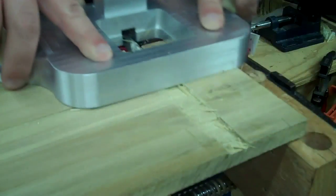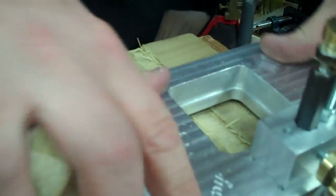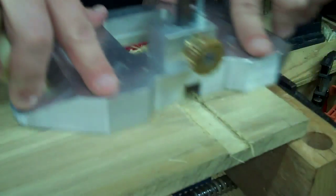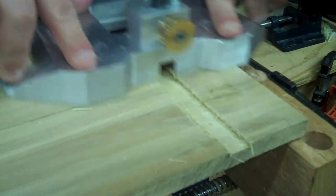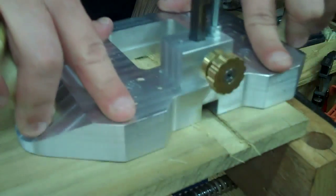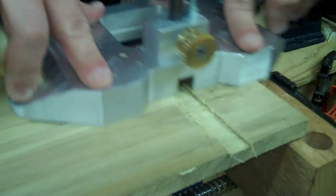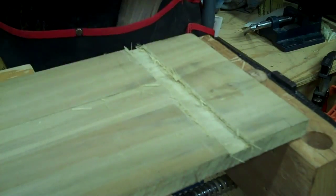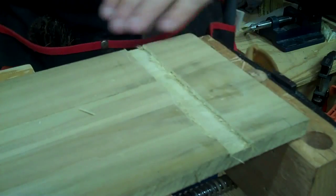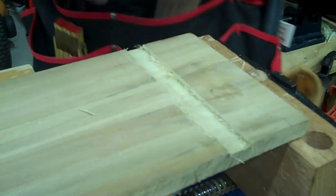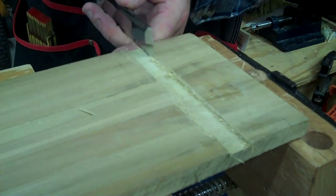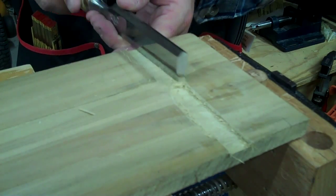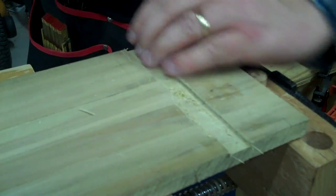All the way at the end. Come back in the other direction. Doing this just to make sure that even if our iron is not sitting perfectly square, we get a nice flat, level bottom. Come back with a paring chisel, clean up the corners.